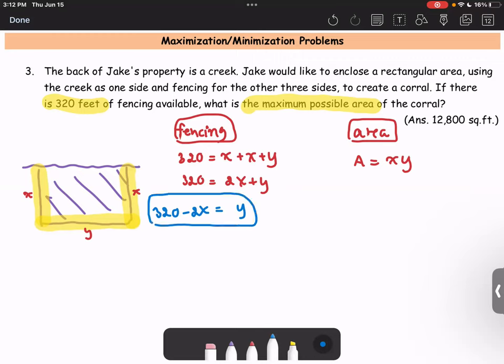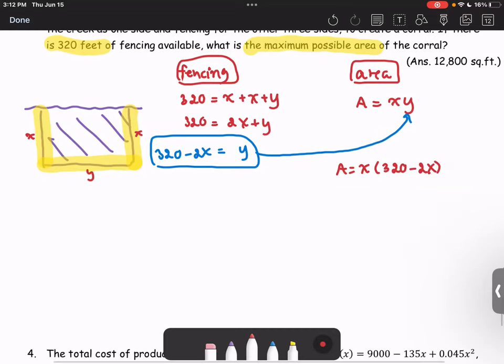And then we're going to use this y as an expression of x to replace the y variable in the terms of the area. Therefore, we get A as x multiplied by 320 minus 2x. Now we have the equation for the area as 320 times x minus 2 times x squared, which is the quadratic function. Or we write it as A equals negative 2x squared plus 320x.